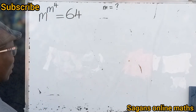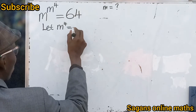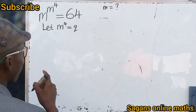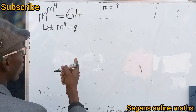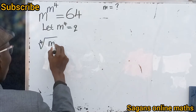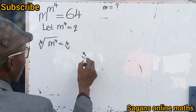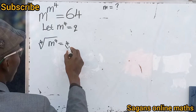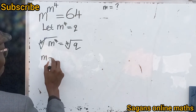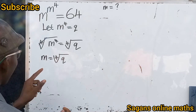One interesting thing we are going to do: let the power m raised to the power of 4 equal some value q. Now we are going to make m the subject of the formula. To do that, we take the 4th root of both sides so we can remove the exponent 4. Taking the 4th root of m^4 gives us m equals the 4th root of q.